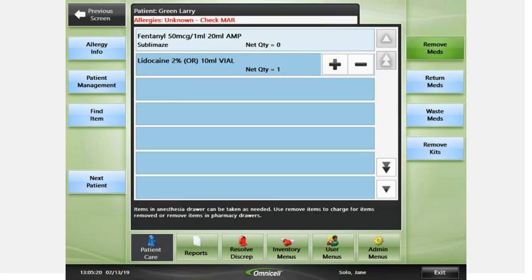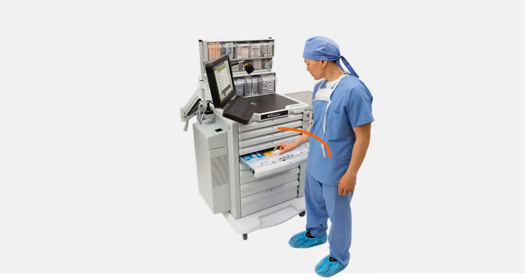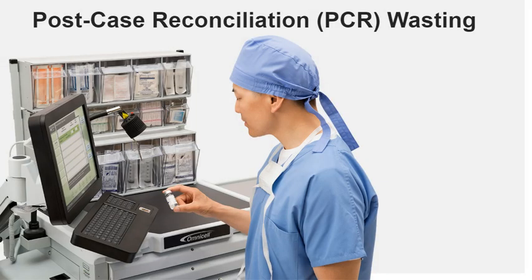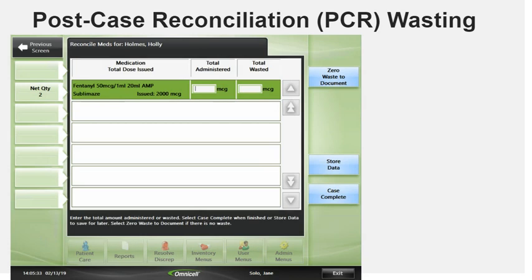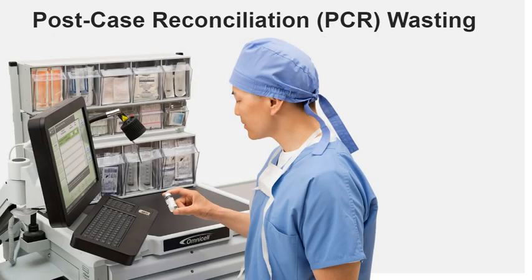For non-narcotic returns, you may press the minus button from the issued item list and place the item back into the drawer. Post-case reconciliation, or PCR, is the process of recording administration and wasted amounts for controlled items used in a case before committing it as complete. To facilitate efficient workflow, this process is performed on a single screen. To use PCR, you must be an eligible PCR user as determined by your facility. Furthermore, only items that are eligible for PCR will be allowed to be reconciled in this way.